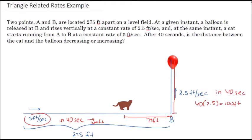Now this distance is 100 feet, and what we're interested in is this distance here from the cat to the balloon. You can see that this is a right triangle problem. We have a 75 foot distance, and the cat is still moving at 5 feet per second, and this balloon is still moving at 2.5 feet per second.